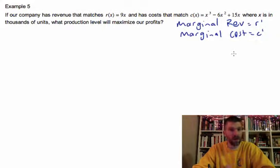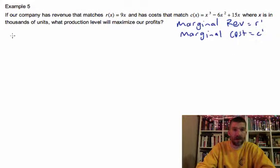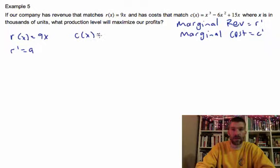Then we find our critical points from that and we're off and running. So if I have R(x) equals 9x, so R prime is 9. C(x) is equal to x cubed minus 6x squared plus 15x.